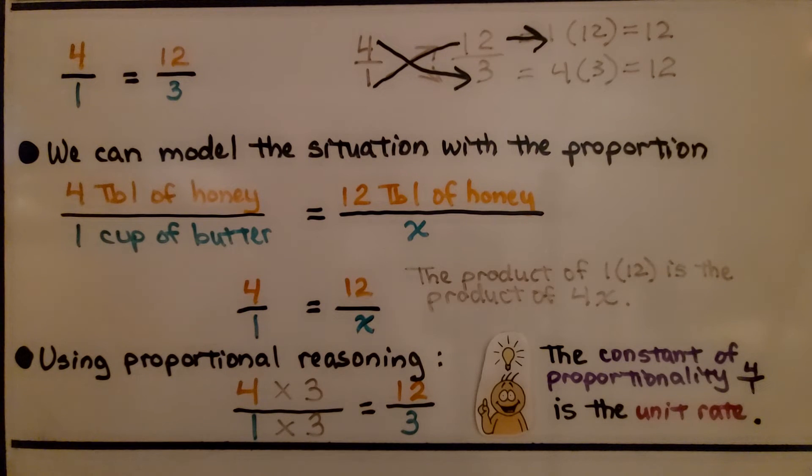So using proportional reasoning, if we multiply 4 times 3 and get 12, we need to multiply 1 times 3 to get 3. The constant of proportionality, 4 over 1, or 4, is the unit rate.